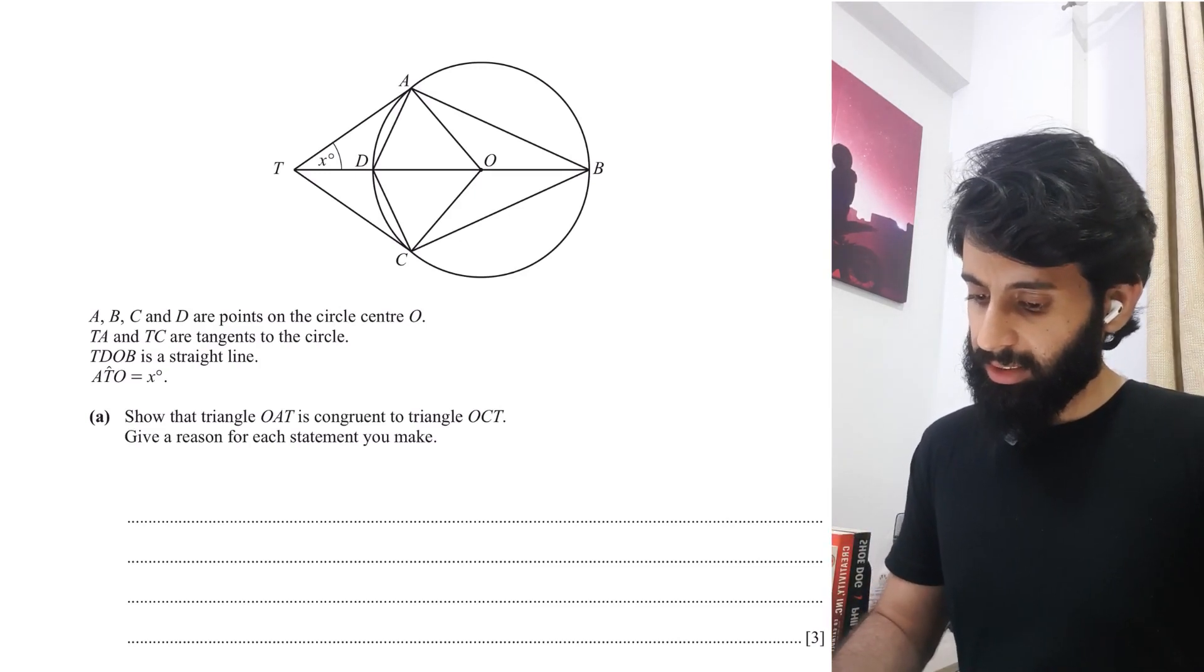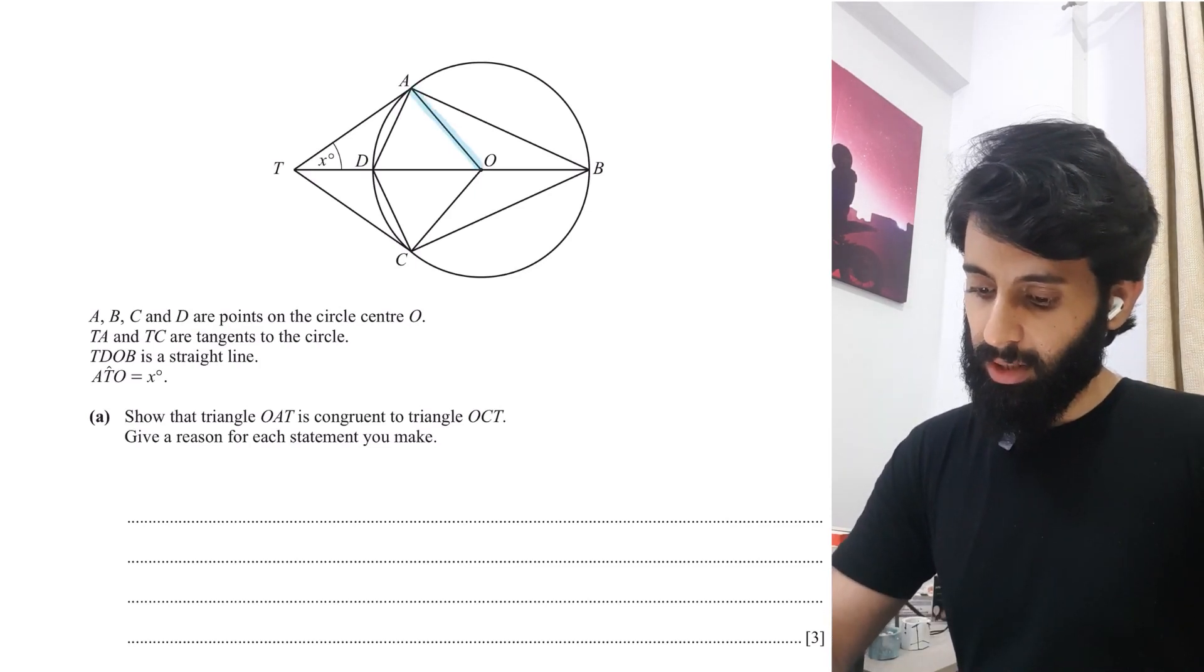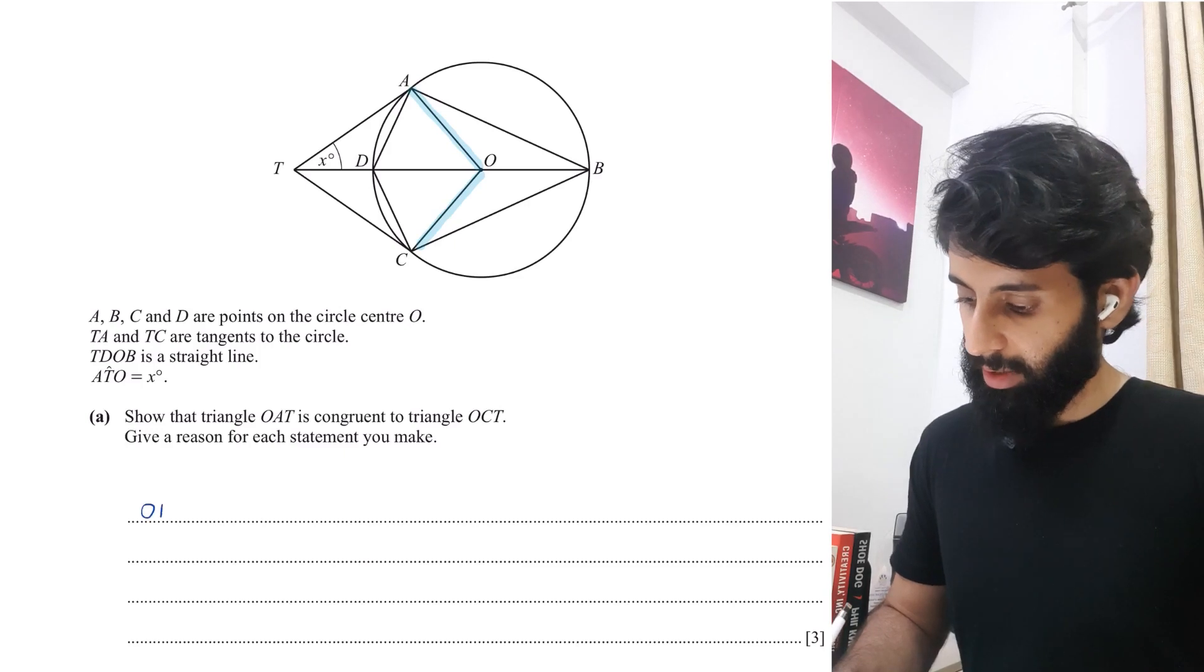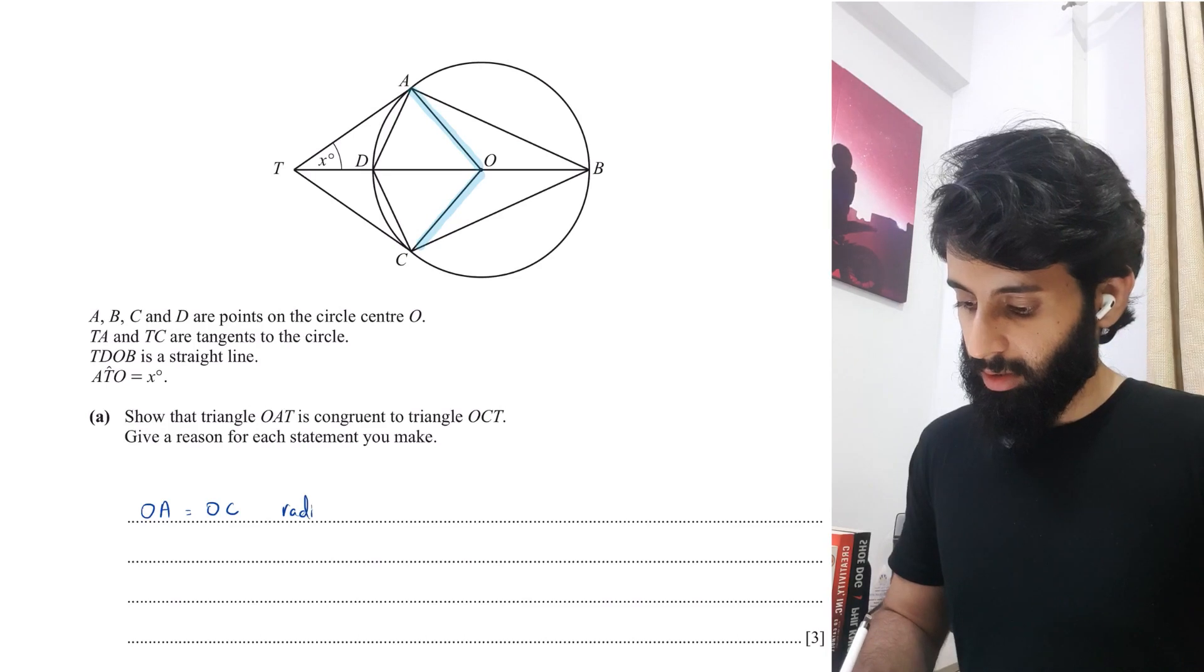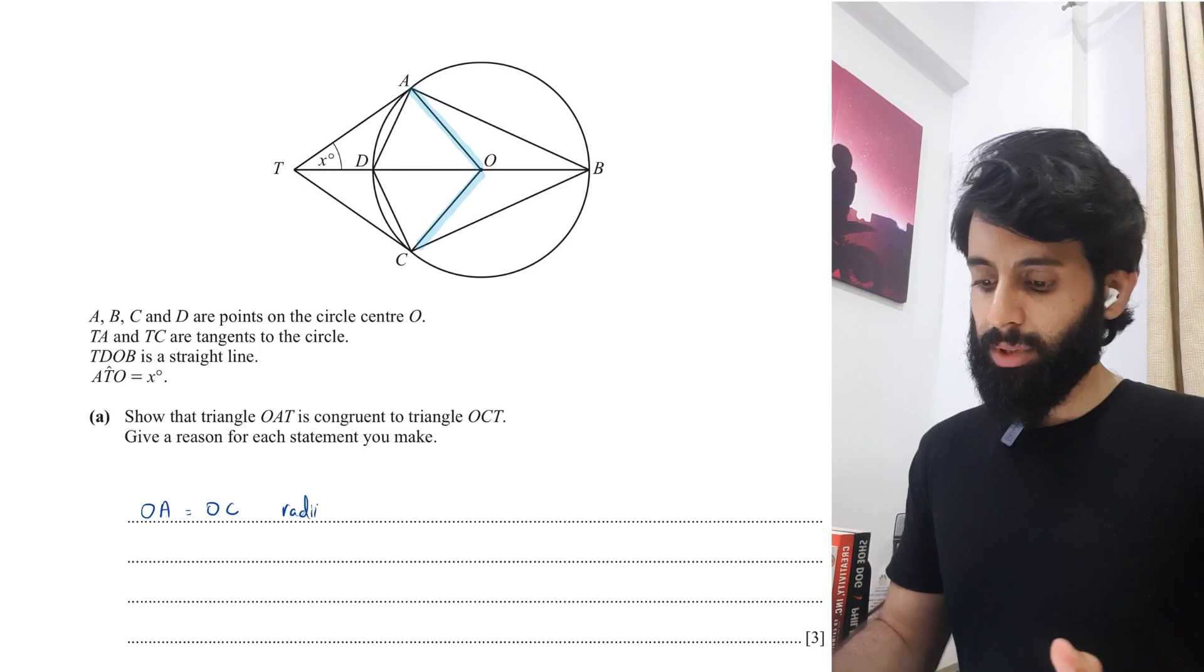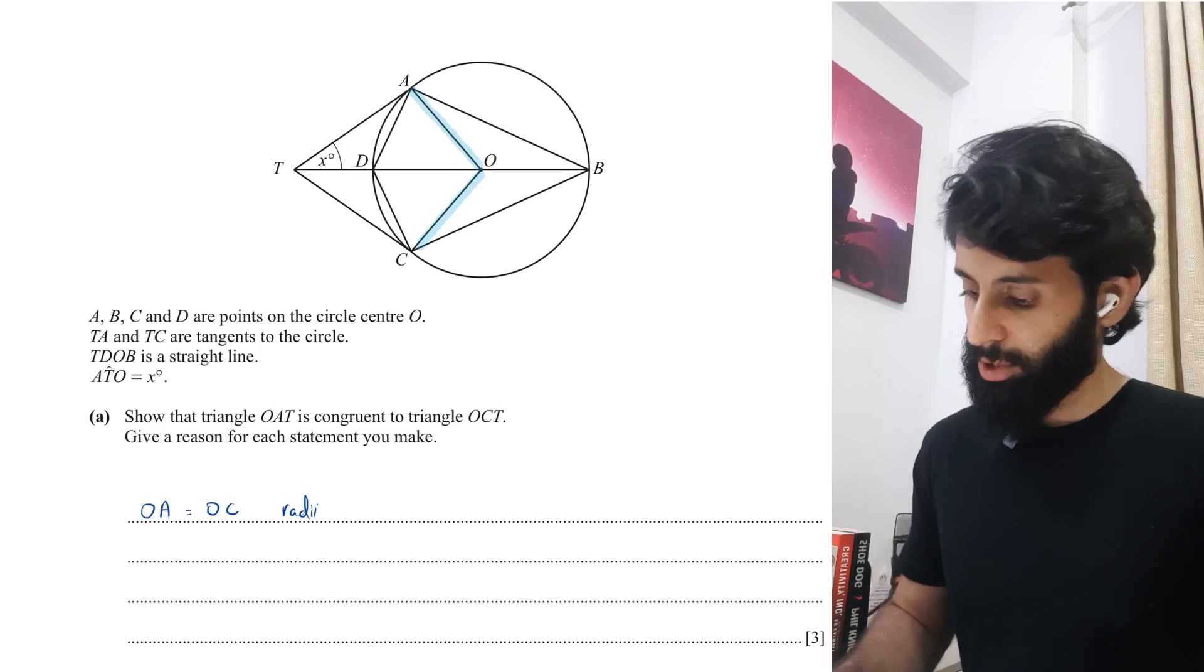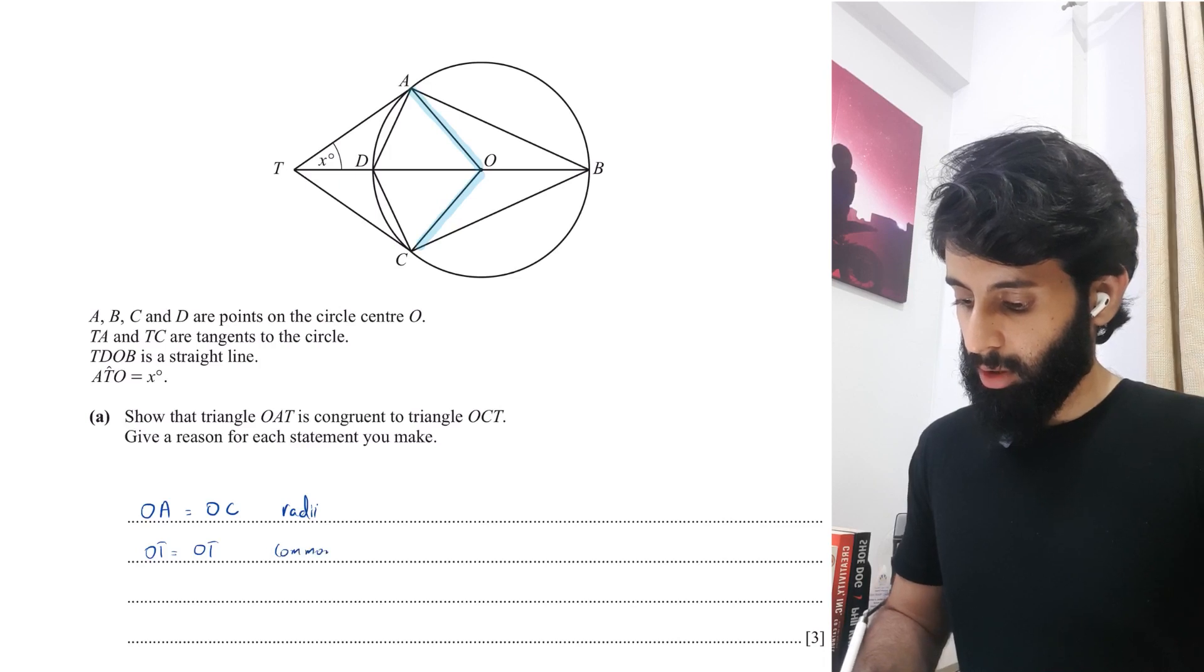First thing is that since OA and OC are both radii of the same circle, I'm going to write OA equals OC and they're both radii. So here's one side of the two triangles that is equal. The next is that they have a common side, which is OT. So OT equals OT and that's common.